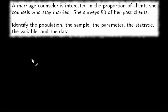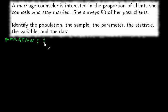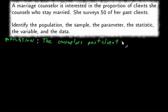A marriage counselor is interested in the proportion of clients she counsels who stay married. She surveys 50 of her past clients. Identify the population, the sample, the parameter, the statistic, the variable, and the data. In this situation, the population is the counselor's past clients — that is, all of them, not just the 50 surveyed. All the counselor's past clients.